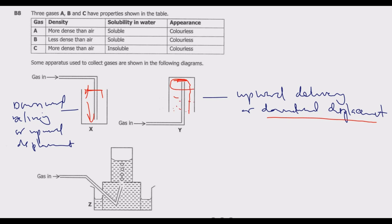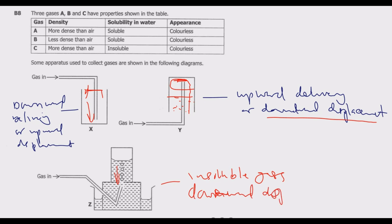This apparatus is used for insoluble gases. This one is the downward displacement of water. So this method is the downward displacement of water.